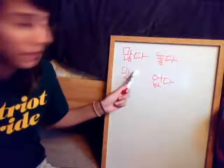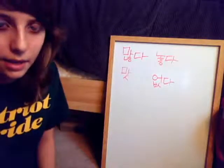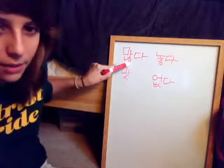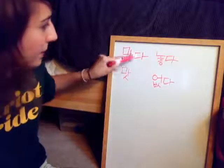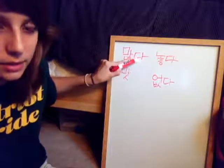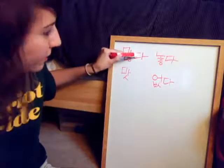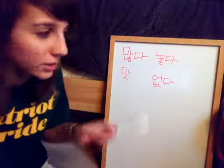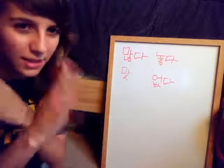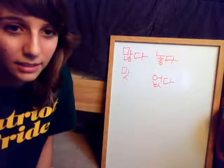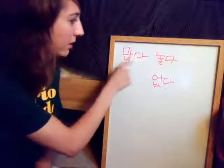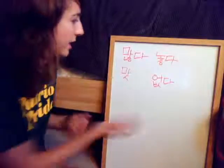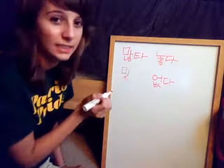So for example, this verb means to be many. And because it has an H sound at the bottom, it makes this sound, this D sound right here, makes it turn into a T sound. You would think that it would be just manda, but that's not right. It's manta, because this H makes this a hard sound. So it sounds kind of like this. But it's not.